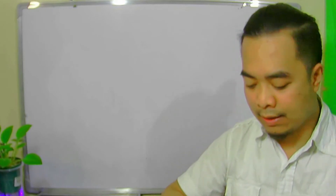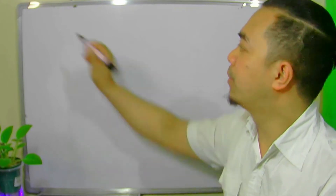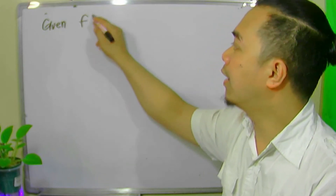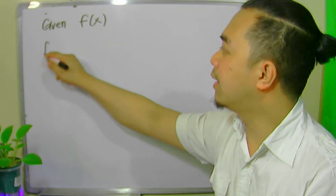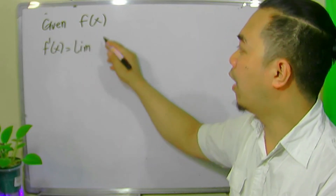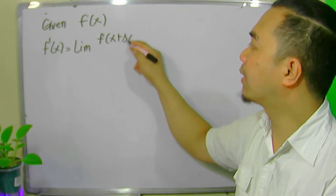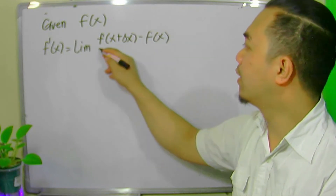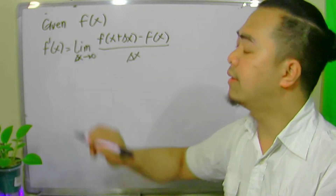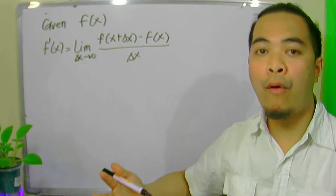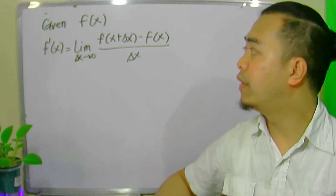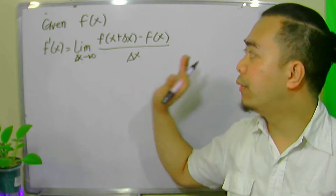So let's recall that by definition, the derivative of a given function, say f of x, is given by the limit of f of x plus delta x minus f of x, all over delta x, as delta x approaches zero. So if we want to compute for the derivative of a function and we are instructed to use the definition of a derivative, then we follow this formula.